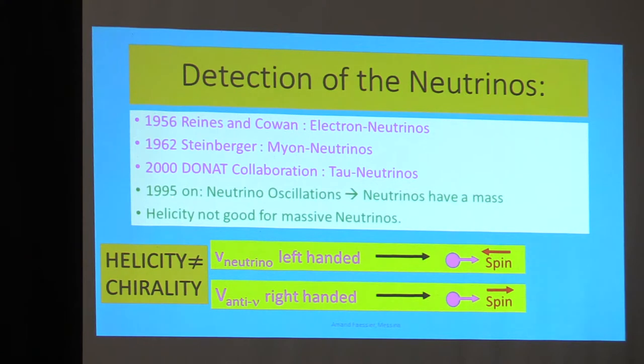Starting from 1995 on, we saw that neutrinos are changing their flavor from electron to muon to tau and back again. And that is only possible if the neutrinos have a mass. First assumption was the neutrino is massless, but the oscillations can only be explained if the neutrino has a mass.